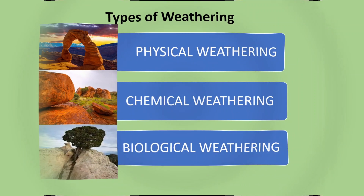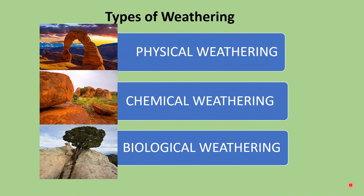Good morning students. Today, in continuation with the lesson on weathering and soil formation, we continue with the next part — types of weathering. Types of weathering includes physical weathering, chemical weathering, and biological weathering.